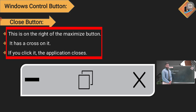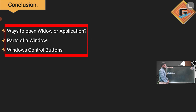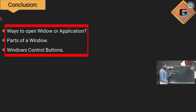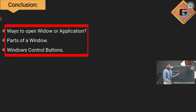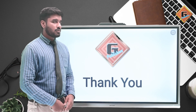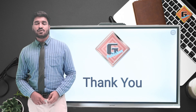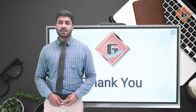Let's go to the conclusion of today's lesson. We studied two ways to open windows and applications. We studied the parts of a window. We also studied the Window Control Buttons — there are three buttons: Minimize, Maximize, and Close. Thank you so much students. I hope you have enjoyed this video lecture. We will see you in the next video. Take care. Allah Hafiz.